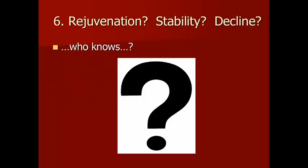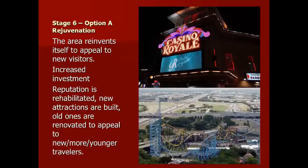This leads us to the sixth stage, where there are three routes a destination could take: rejuvenation, stability, or decline, depending on what's going on at that location at that time. The first option is rejuvenation, where the area reinvents itself to appeal to new visitors. There's increased investment, the reputation is rehabilitated, and new attractions are built while old ones are renovated to appeal to newer or younger travelers — such as a casino or amusement park — bringing more people in and keeping the destination successful.